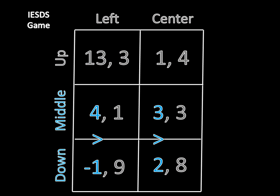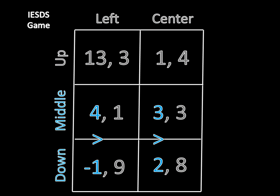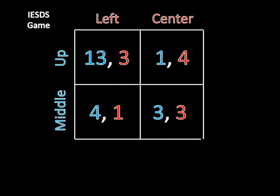And you might notice that middle now dominates down for player one as four is greater than negative one, and three is greater than two. The interesting thing here is that this wasn't the case when right was still in the game. Six is not greater than eight. But because the rules of strictly dominated strategies allow us to eliminate entire strategies from the game and rewrite matrices like this, we can say that middle dominates down and get rid of down, leaving us with this game remaining.